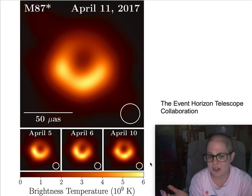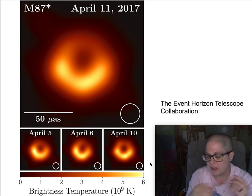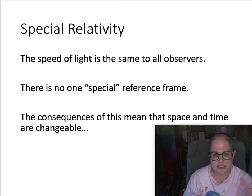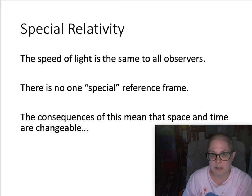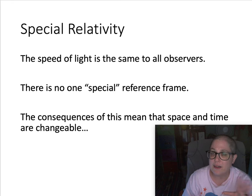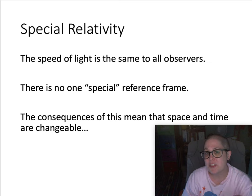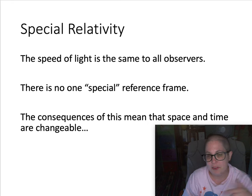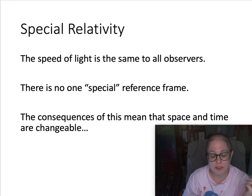To understand black holes, we need to go into something called relativity. Relativity is actually a couple of theories devised primarily by Albert Einstein in the early part of the 20th century, and it really turned physics on its head. Up until that point, the physics of motion behaved the way we thought it should. But there had been some troubling work done particularly around light. Special relativity starts with a postulate: the speed of light is the same to all observers no matter how they're moving.